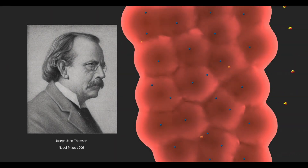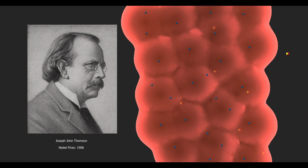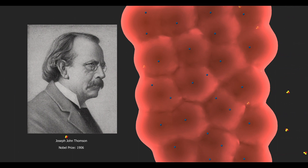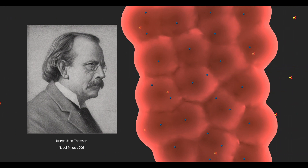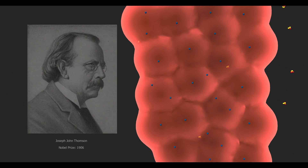By the end of the 19th century, it had become clear that the theory of the atom's indivisibility could not be maintained any longer. At the turn of the century, English physicist Joseph John Thomson assumed that the negatively charged electrons are embedded in a positively charged substance. Thomson referred to this as the raisin pudding model, because he was reminded of raisins embedded in the surface of a pudding.